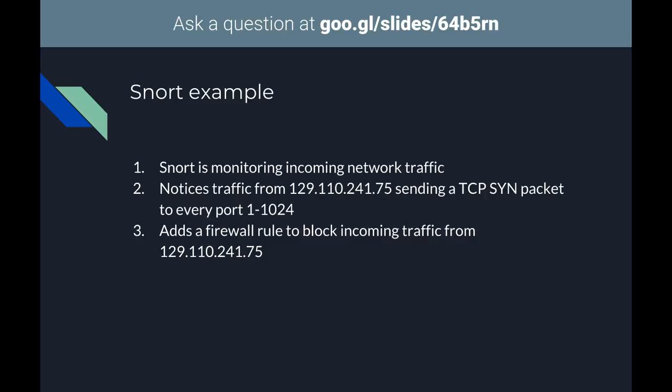For an example: Snort is monitoring all incoming traffic to the VM and you notice traffic from an IP address sending a TCP SYN packet to every port iteratively from 1 through 1024. This sounds like strange behavior because it is — it's how nmap enumerates ports. So you add a firewall rule to block that incoming traffic and your NIPS solution has worked.